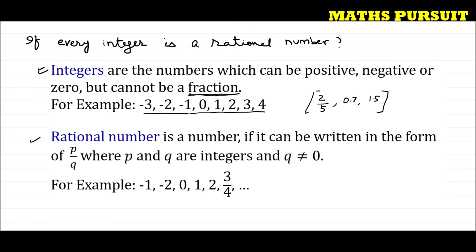Now let us look into the definition of rational number. A rational number is a number if it can be written in the form p/q, where p and q are integers and q is not equal to 0. This condition — q is not equal to 0 — is the most important part.